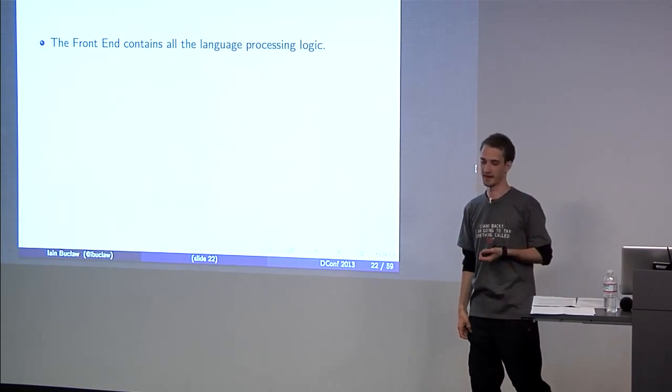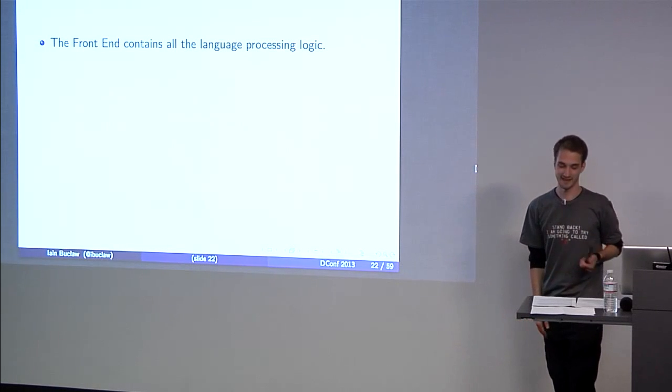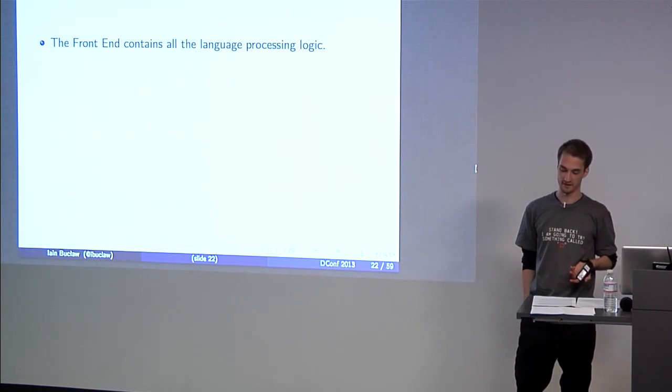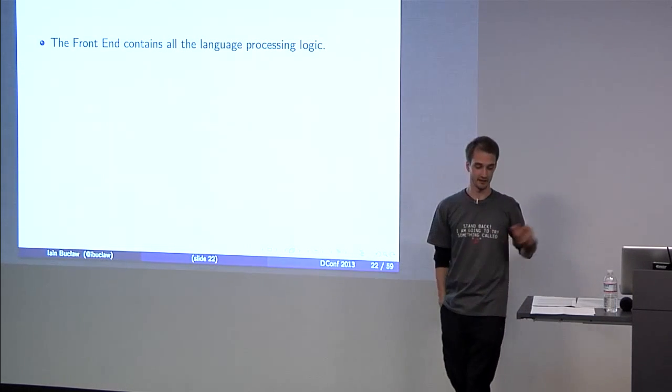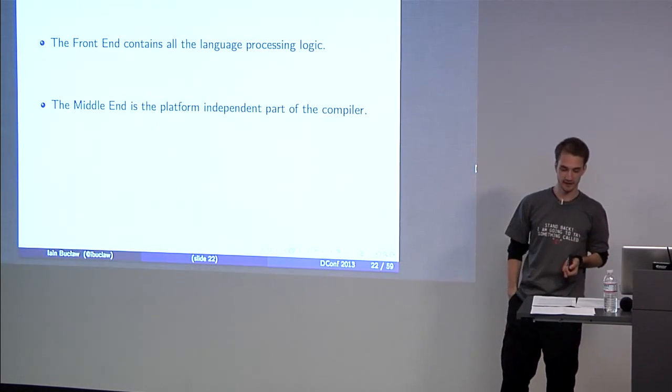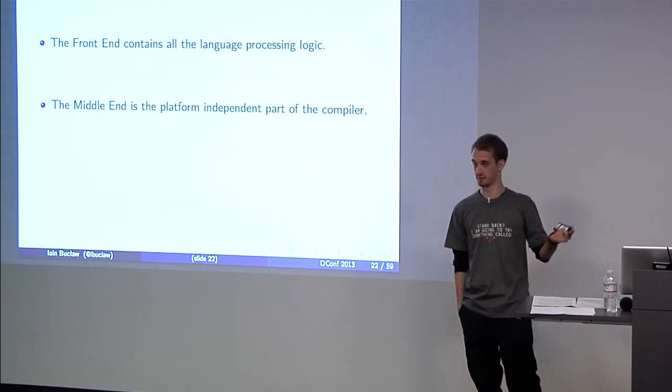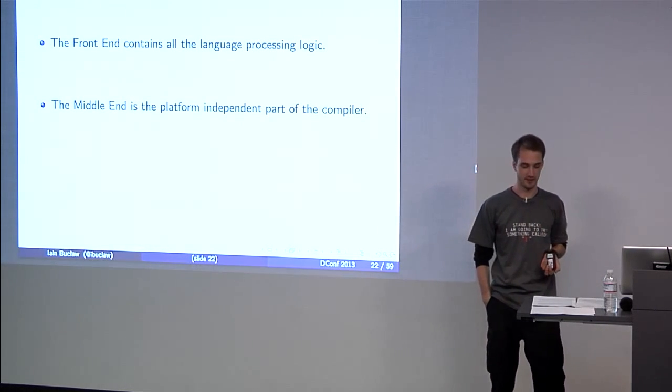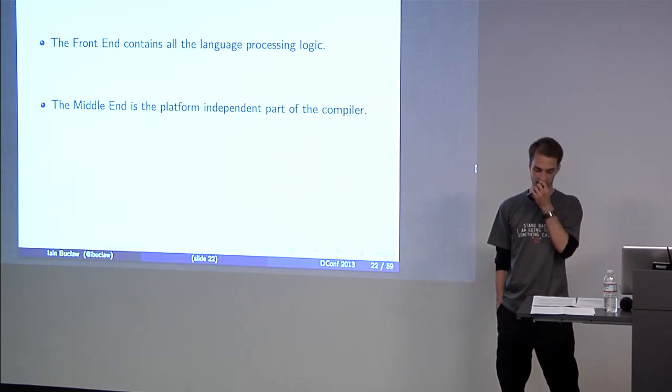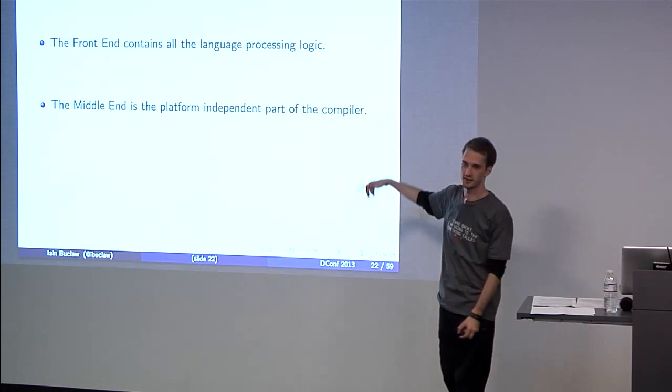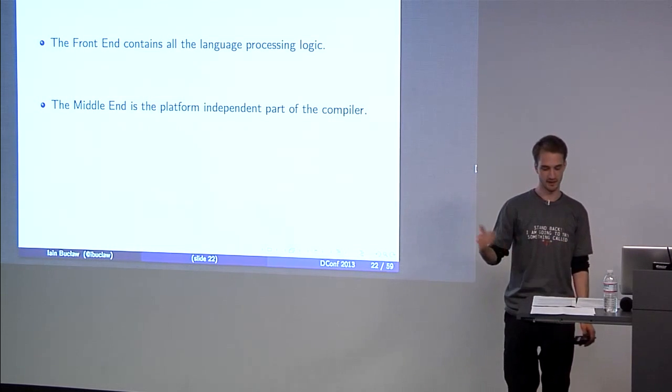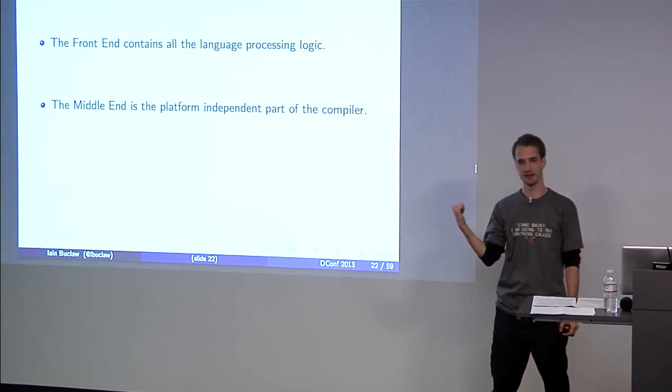There are two intermediate languages between the three front ends. Between the frontend and middle end, there's generic. And between the middle end and backend, there's RTL or register transfer language. So, the frontend itself contains all the language processing logic. The goal of the frontend is to analyze the source program and ensure that all types are correct in all constraints required by the language definition hold. If everything is sound, then it generates a generic representation of the program.